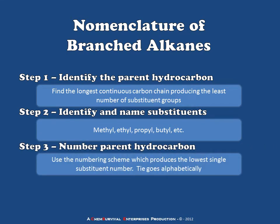In step three, we assign numbers to each atom within the parent hydrocarbon in such a way as to produce the scheme with the lowest single starting substituent number. In the event of ties, we go alphabetically, and in the event of an alphabetical tie, we go on to additional rules.